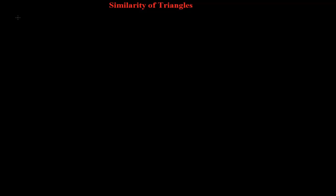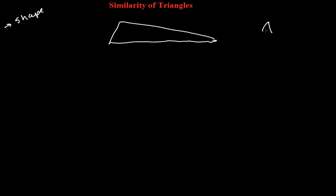First, you need to see how the shape of the two triangles looks. To be similar, first you need to look at the shape. Suppose you have a triangle something like this and another very small triangle like this. One side is very lengthy, another is a little smaller, and one is very small. If you compare the shapes, they don't look the same, so we cannot consider them similar.